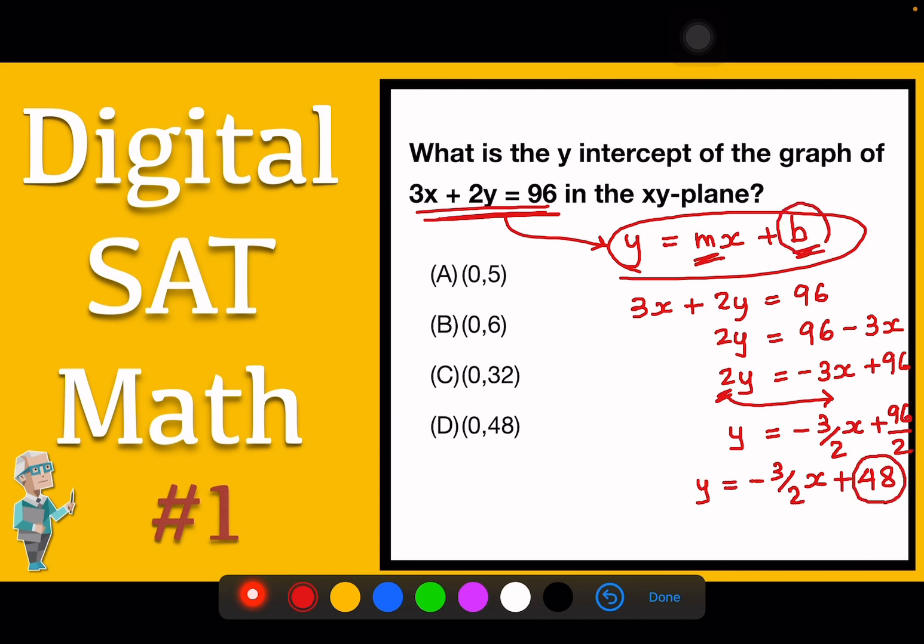48 means it is b, which is the y-intercept of that graph. So we can also get the value of y-intercept by solving in this way. That is all for this video. Thank you for watching. Stay tuned for more videos.